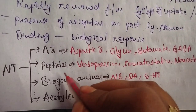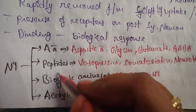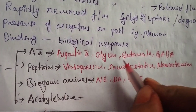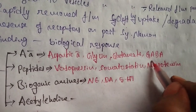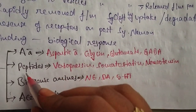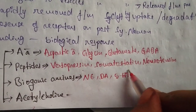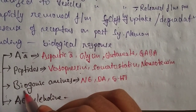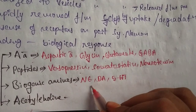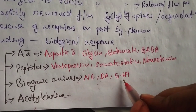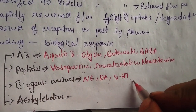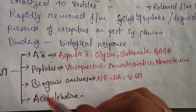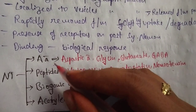Based on chemical structure, neurotransmitters are classified into four types. First, amino acids: aspartic acid, glycine, glutamate, and GABA. Second, peptides: vasopressin, somatostatin, and neurotensin. Third, biogenic amines: norepinephrine, dopamine, and 5-hydroxytryptamine. Fourth, acetylcholine is a separate category of neurotransmitters.